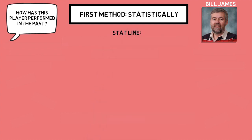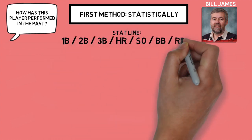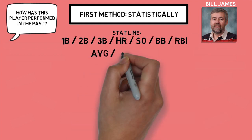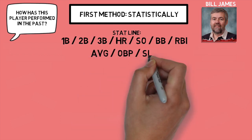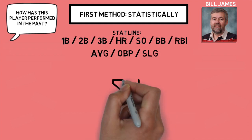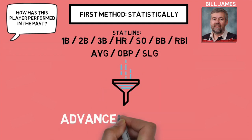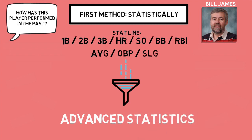The typical fan is adept at reading the typical stat line, whether that is counting stats like singles, doubles, and triples, or the classic slash line of average, OBP, and slugging. All of that filters into what we refer to today as advanced statistics, or sabermetrics.